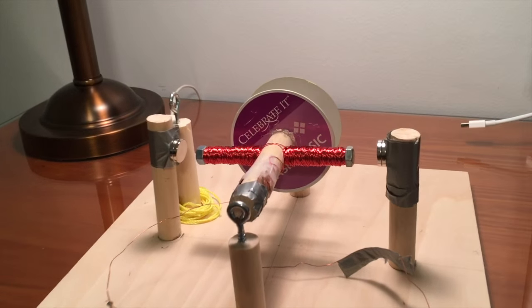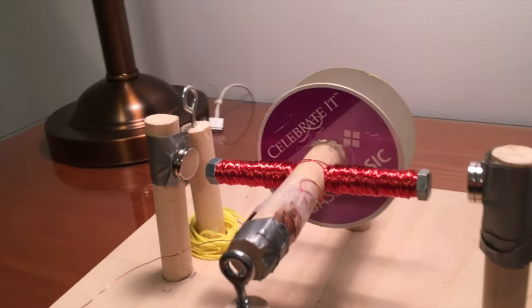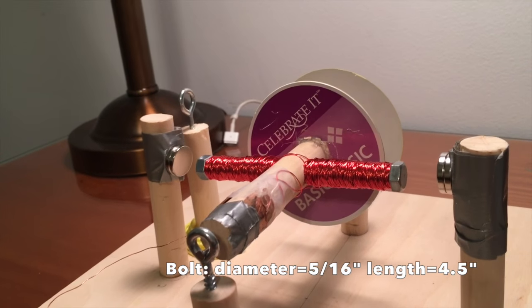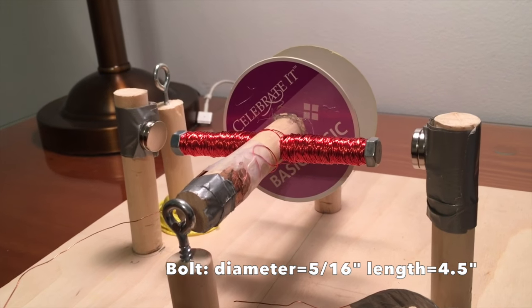So here's our electric motor. The armature is made up of 26 gauge enameled copper wire wrapped around an iron bolt that is 5 sixteenths of an inch.